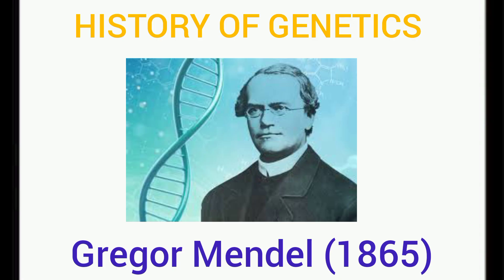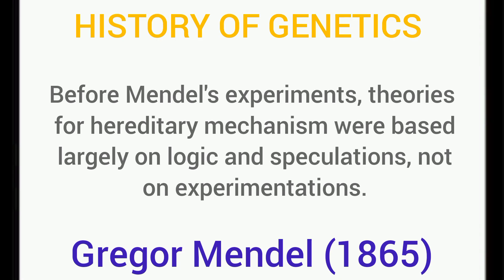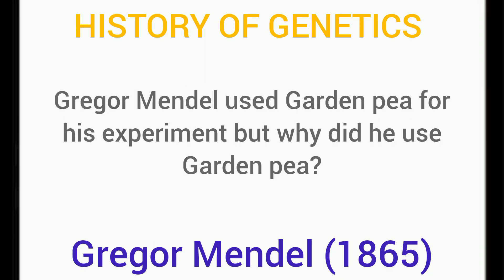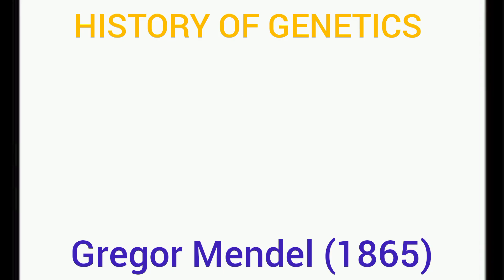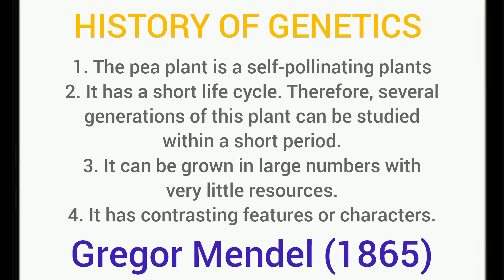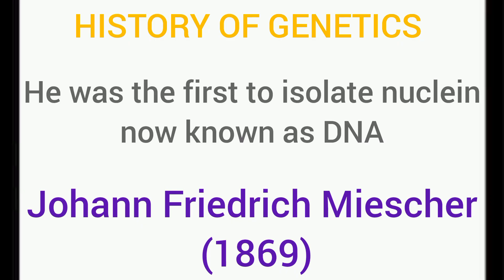Gregor Mendel is credited as the father of genetics. Before his experiment, every other theory had been speculation. Gregor Mendel used garden peas for his experiment. The reasons include: the pea plant is self-pollinating, has a short life cycle, can be grown in large numbers with very little resources, and has contrasting features or characters such as short plants and tall plants. Joan Friedrich Miescher was the first to isolate nuclein, now known as DNA. DNA, deoxyribonucleic acid, is a double helical structure — a polymer made up of nucleotides.